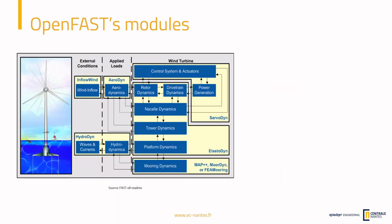Last time we had the simulation with ElastoDyn, which models the tower, blade, and structure. We also used AeroDyn and InflowWind for aerodynamic loads and incoming wind. Today we want to add power generation and control to the system, so we are going to use the ServoDyn module — that is the module we are going to learn today.